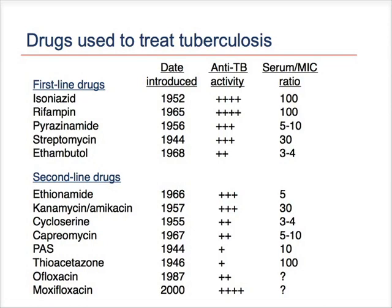These are the drugs that we use to treat tuberculosis today, separated into first-line and second-line drugs. The first-line drugs include those with the most activity against Mycobacterium tuberculosis that form the core of our treatment of most patients and are highly effective. The second-line drugs are generally reserved for patients with drug-resistant tuberculosis or patients who cannot tolerate the first-line drugs because of side effects. In general, the second-line drugs have less activity in killing Mycobacterium tuberculosis, and they're often associated with even more side effects.